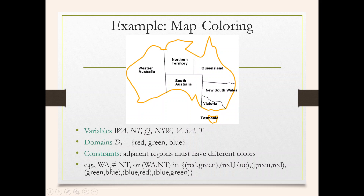For example, WA's color should not equal NT's color. The allowable combinations for WA and NT, considering three colors, would be: red-green, red-blue, green-red, green-blue, blue-red, and blue-green. These are all possible combinations satisfying the constraint that adjacent regions must have different colors, considering these two variables.